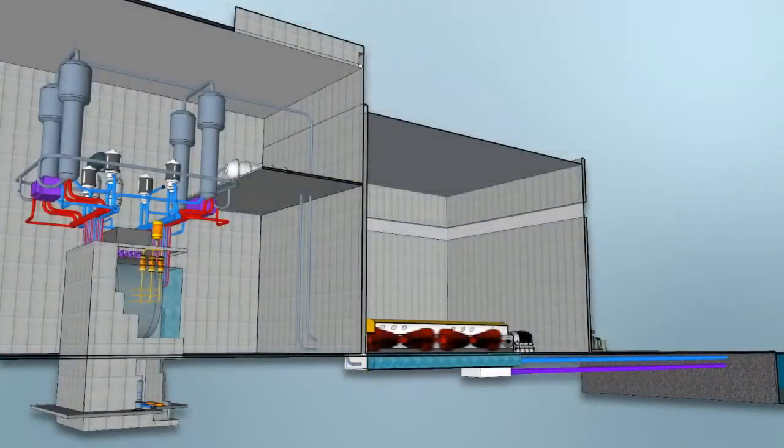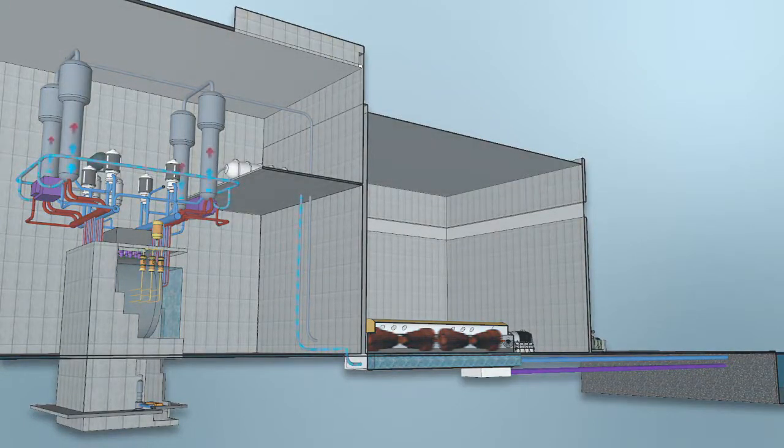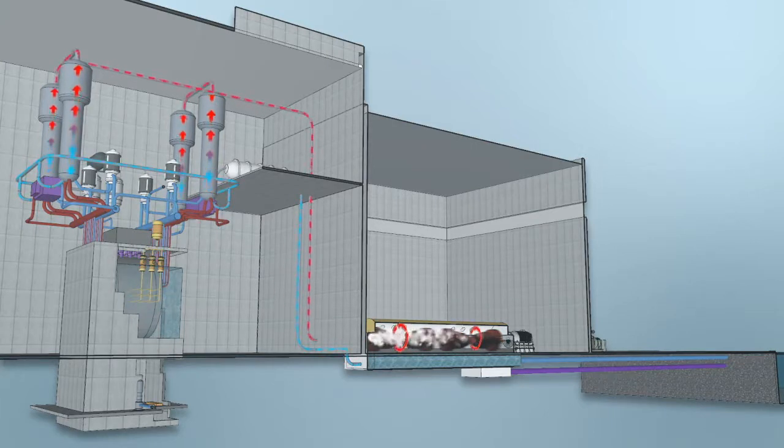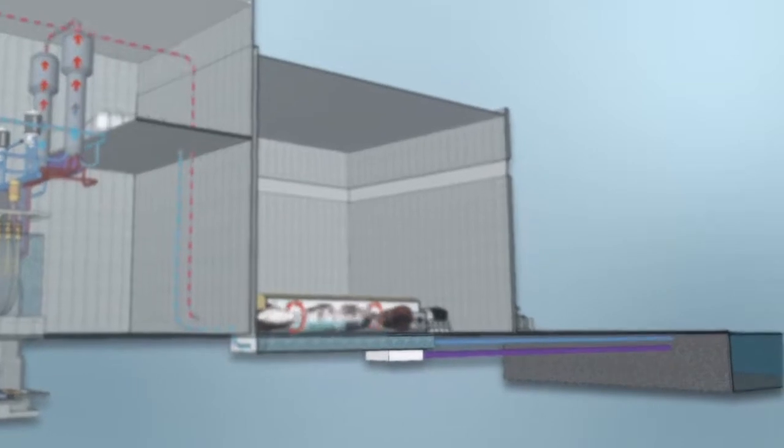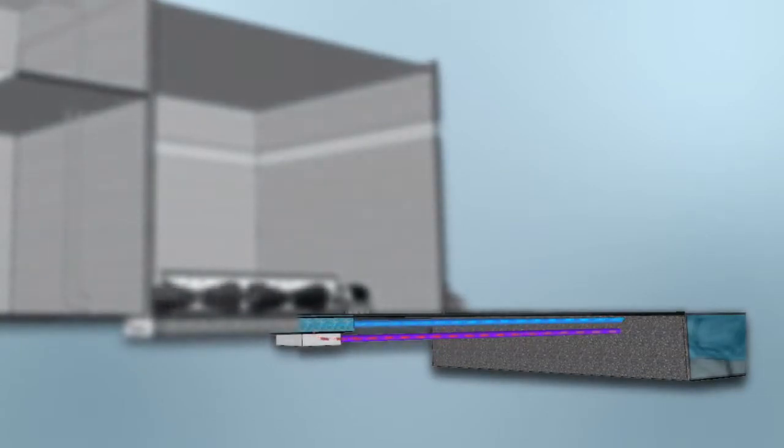The second system, the steam system, uses normal water. The heat from the reactor turns this water into steam to run the turbines and generators. That steam is then cooled and condensed using a third system that pumps in cold water from a body of water such as a lake or reservoir. This is called the condenser cooling system.